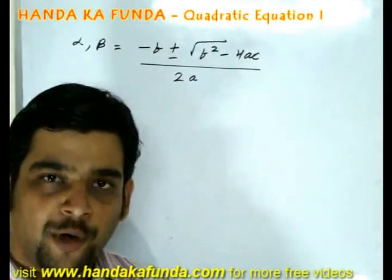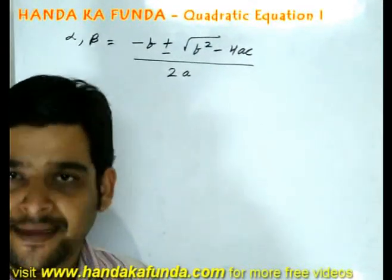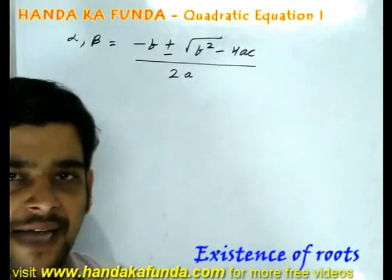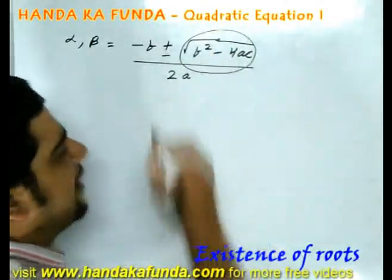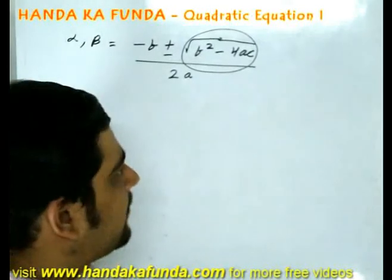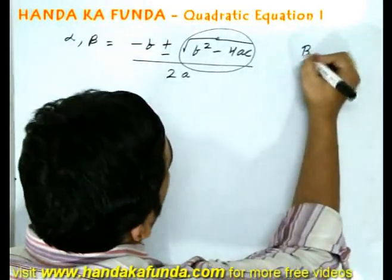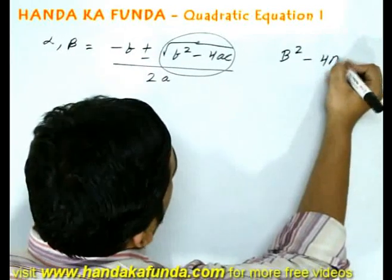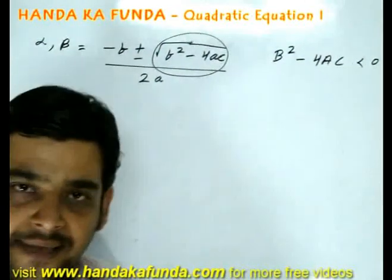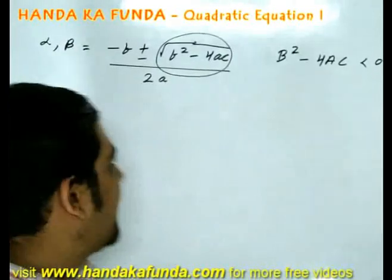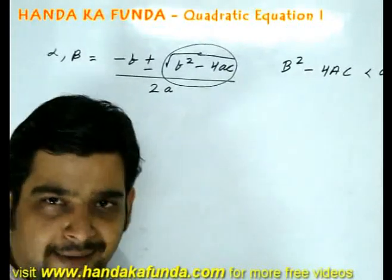It is also important to know when the roots will exist and when they won't. For that, we need to look at the square root portion, that is b square minus 4ac, in a little more detail. Just think about it. If b square minus 4ac is less than 0, then I will have a negative number inside the root. In that particular case, alpha and beta will not exist.